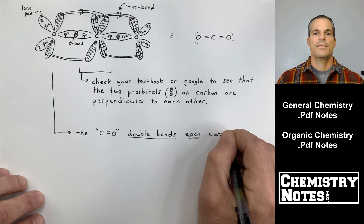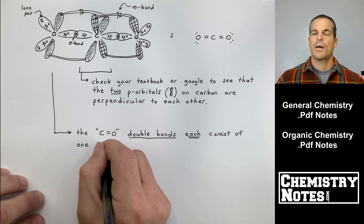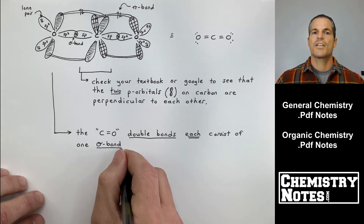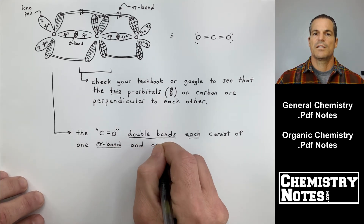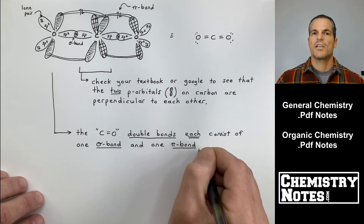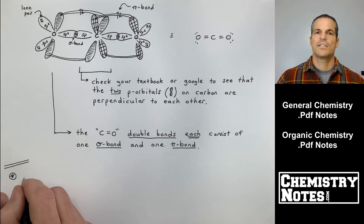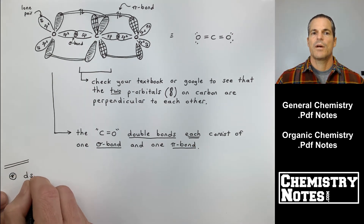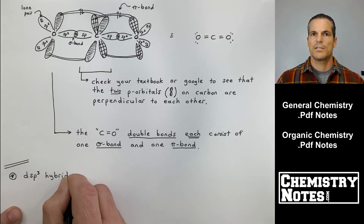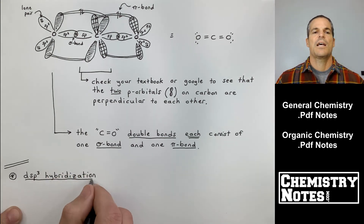The carbon-oxygen double bonds each consist of one sigma bond and one pi bond — just like the carbon-carbon double bond in our previous example. Anytime you have a double bond, it's one sigma bond and one pi bond.